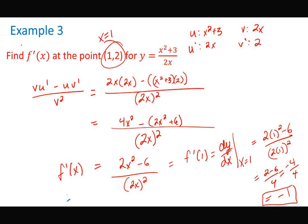So what does negative 1 mean? It's the slope of the tangent line at the point (1, 2). If you were to graph this curve, at the point x equals 1 on the curve, the tangent line would have a slope of negative 1. All that work is simply telling us the exact slope of the tangent line at that specific point.